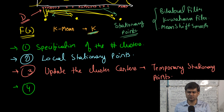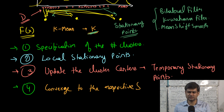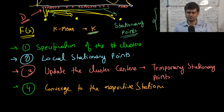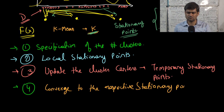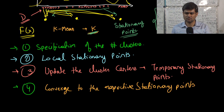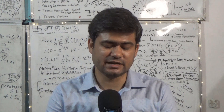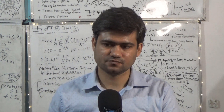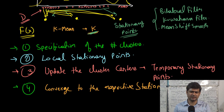At every iteration, when associating data points with cluster centers, these cluster centers are local stationary points. Using the associated points, we update each cluster center by taking the mean of all data points assigned to it. These temporary stationary points change at every iteration but the number of clusters never changes as the k-means algorithm progresses. When the algorithm converges, the cluster centers settle at stationary points based on what local minima the algorithm converges to, which depends on the initial random starting point.